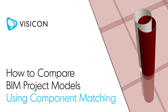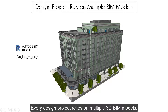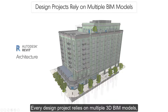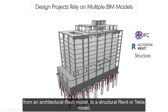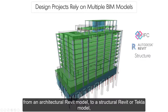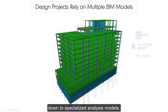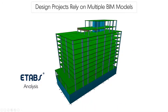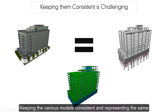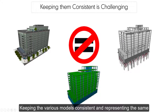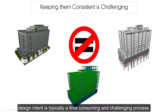Every design project relies on multiple 3D BIM models — from an architectural Revit model to a structural Revit or Tekla model, down to specialized analysis models. Keeping the various models consistent and representing the same design intent is typically a time-consuming and challenging process.